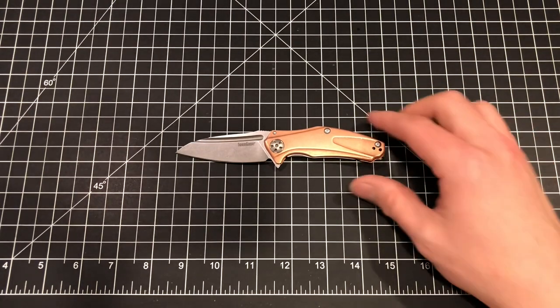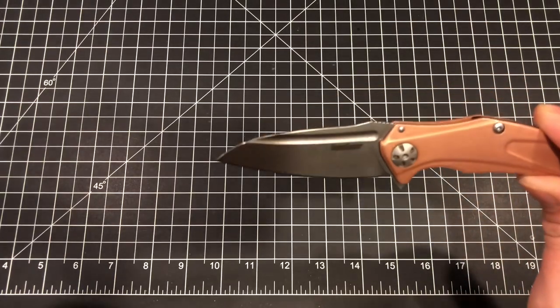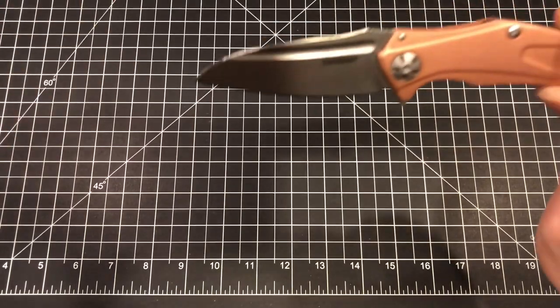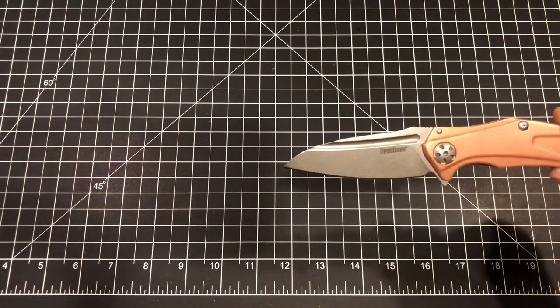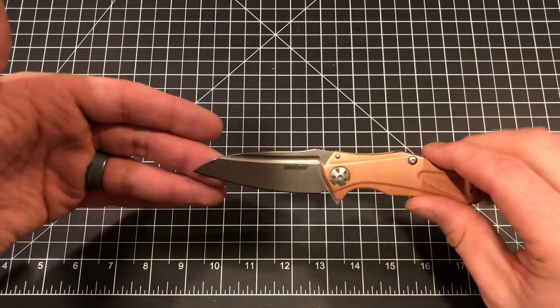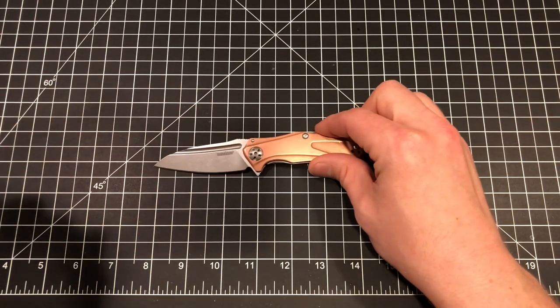Speaking of which, they call this a drop point, which I guess by definition it is, in that the point does drop, but it's kind of got, I don't know, for me it's kind of Warren Cliffy in a good way. So I'm just digging the blade shape. Everything about it, I love the blade shape.